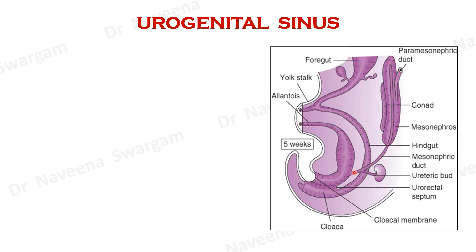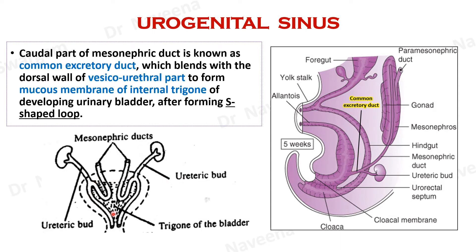Here is the mesonephric duct opening into the urogenital sinus. The caudal part of the mesonephric duct between the ureteric bud and urogenital sinus is known as the common excretory duct. At this stage it starts blending with the dorsal wall of the vesico-urethral part of the urogenital sinus after forming an S-shaped loop. The mesodermal cells from the mesonephric duct proliferate to form the mucus membrane of the internal trigone of the urinary bladder.